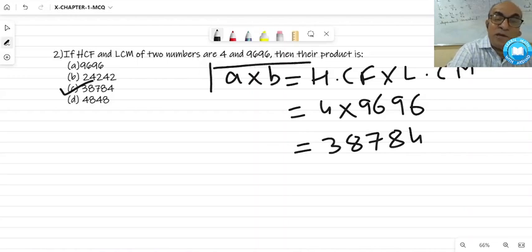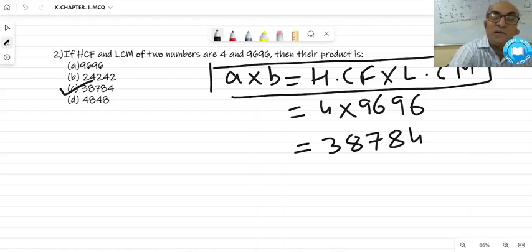In this question, actually this is the main concept. You have to practice many questions to learn these concepts. Concept-based mathematics you have to do, not solution-based. There are 4 unknown quantities: A, B, HCF, LCM. So 4 types of questions they can frame. 3 of them will be given, you have to find the fourth one.